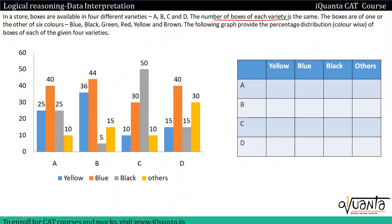Based on this, we will make our table. Now what we are told is that the number of boxes of each variety is the same, so let's take a common value. Let's say all varieties have P number of boxes. Now if we see variety A, 25% of it is yellow, which means P/4 is yellow. 40% is nothing but 2P/5. 25 is nothing but P/4 and 10 is nothing but P/10.